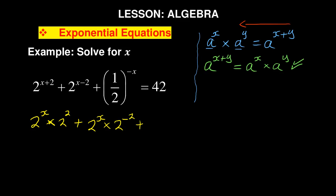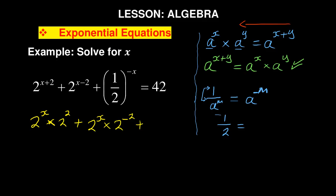There is another law I need here: 1 over a to the power m equals a to the power of negative m. This means to get rid of the division sign — the 'one over' part — I put a negative in the exponent. So 1 over 2 is the same as 2 to the power of negative 1.